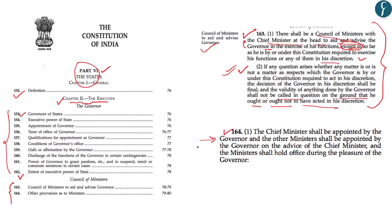It's also important to look at Article 164, which deals with the appointment of the chief minister. Article 164(1) states that the chief minister shall be appointed by the governor, and other ministers shall be appointed by the governor on the advice of the chief minister. The ministers shall hold office during the pleasure of the governor. However, this article does not specify who shall be appointed as chief minister, which is the source of debate over the governor's power.